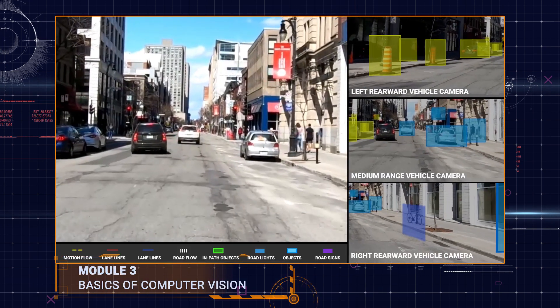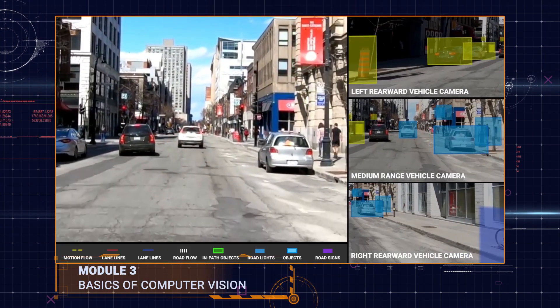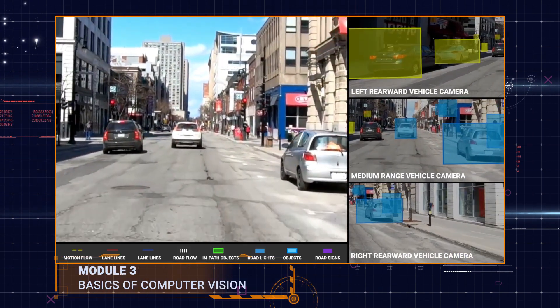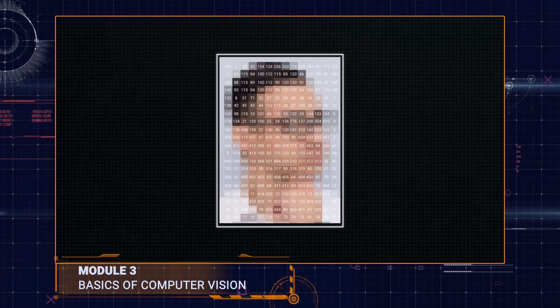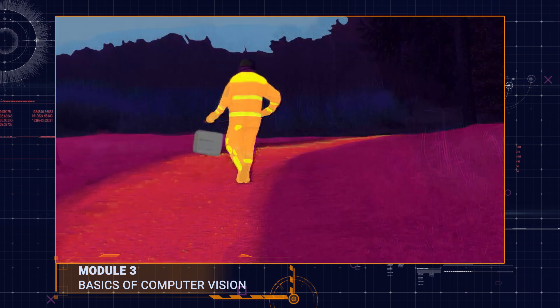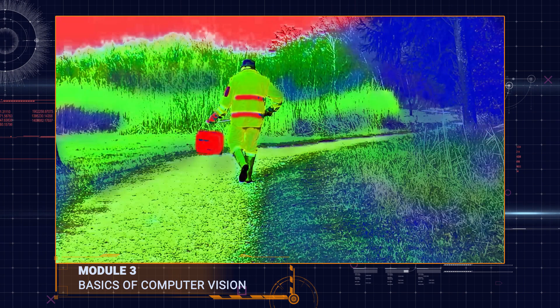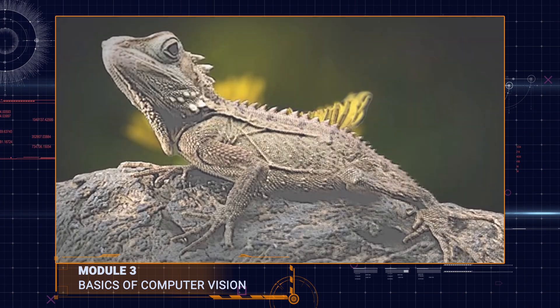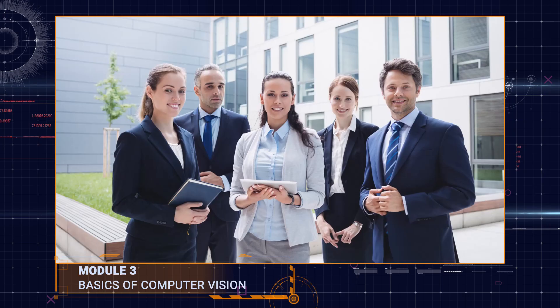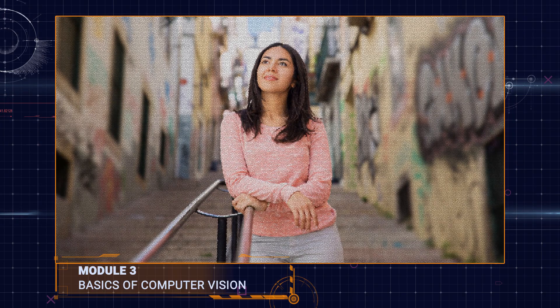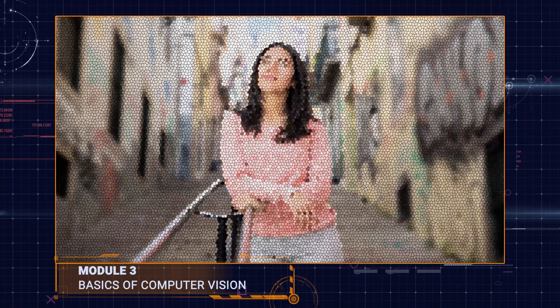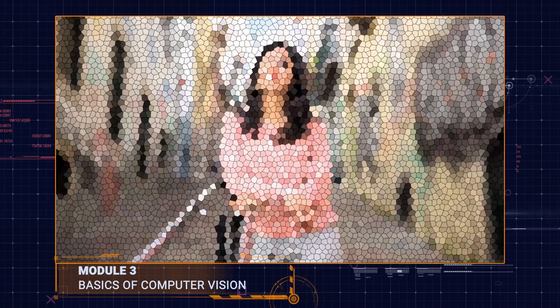In module three, you will learn the basics of computer vision. Start with the parameters and processes that define computer vision and delve into details like image processing, edge detection, and image segmentation. This is where everything you have learned comes to life.